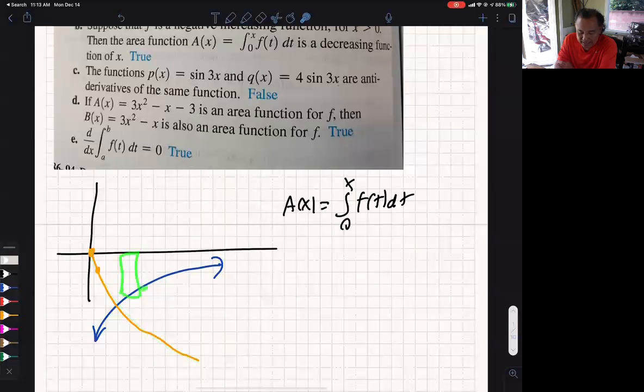The reason it's decreasing, you keep adding more negative area so the net area becomes smaller and smaller. So that is going to be true.